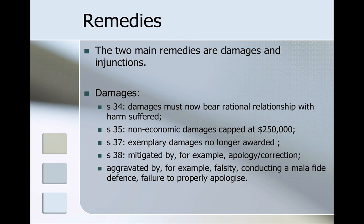Those then are the defences. Let's look briefly at the remedies. The two main remedies the court can order to try and right the wrong are damages and also injunctions. When talking about damages, the new uniform defamation laws require that damages must bear a rational relationship with the harm suffered. Non-economic damages are also capped at a quarter of a million dollars. Exemplary damages are no longer awarded and damages can be mitigated by, for example, an apology or correction, but can also be aggravated by falsity, conducting a mala fide defence, or failure to properly apologise.